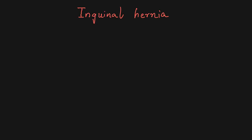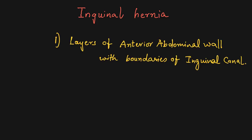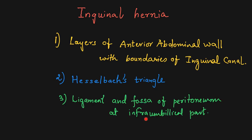Let's have a discussion of the inguinal hernia. To understand inguinal hernia we should have three things very clear: number one, the layers of the anterior abdominal wall with the boundaries of the inguinal canal; number two, Hesselbach's triangle; number three, ligaments that are infra-umbilical ligaments, which give folds to the peritoneum and formation of fossae in between.